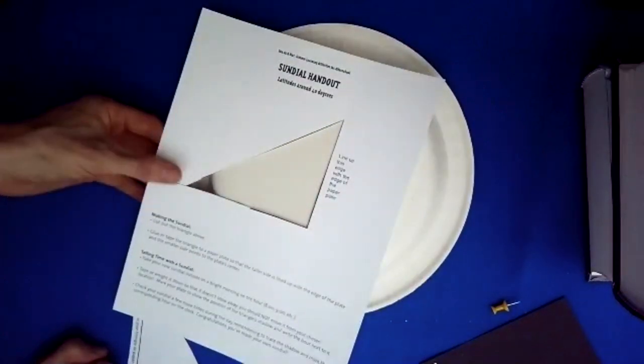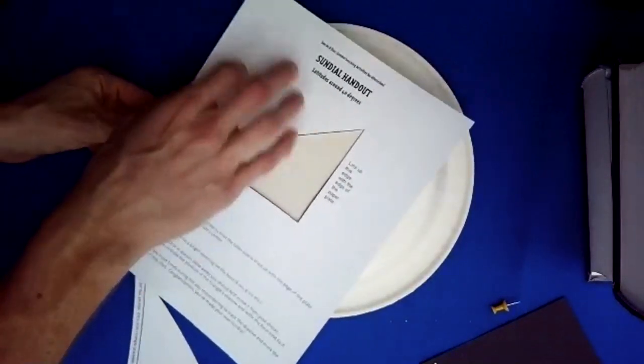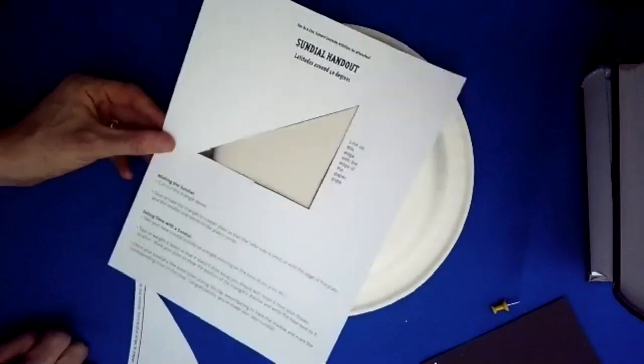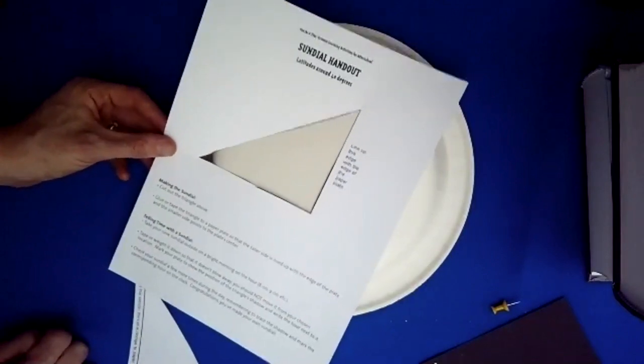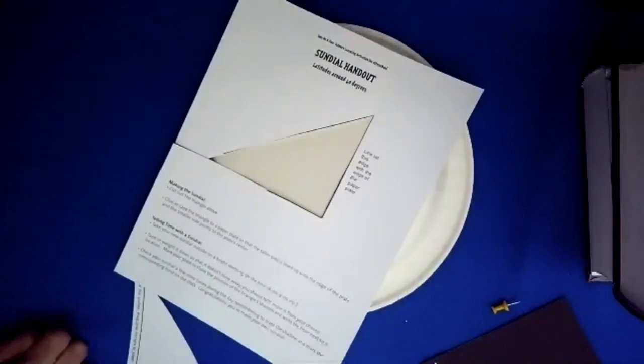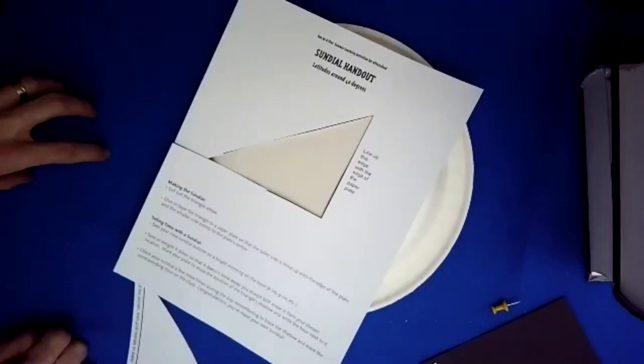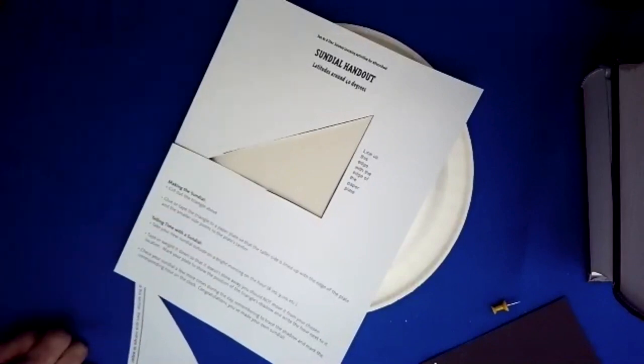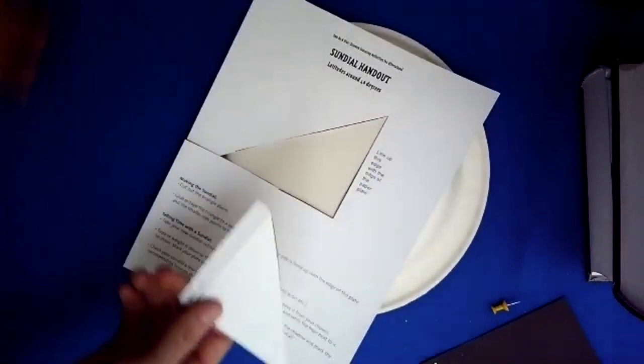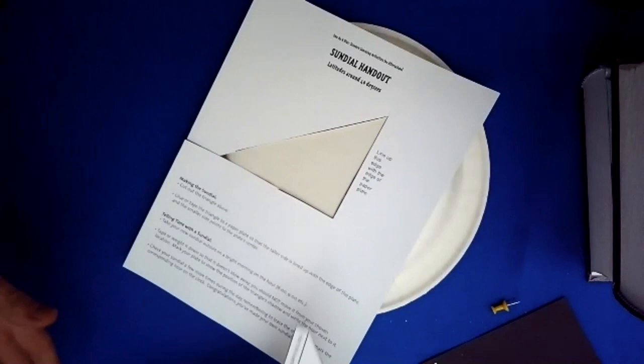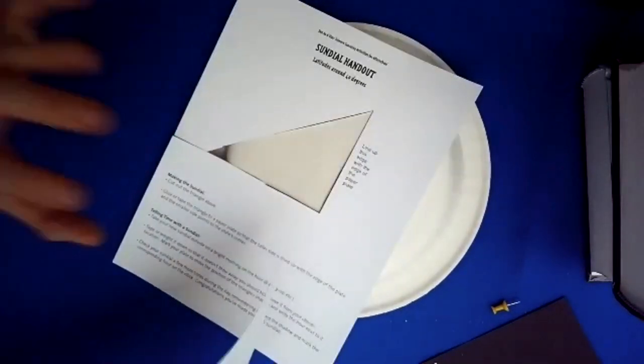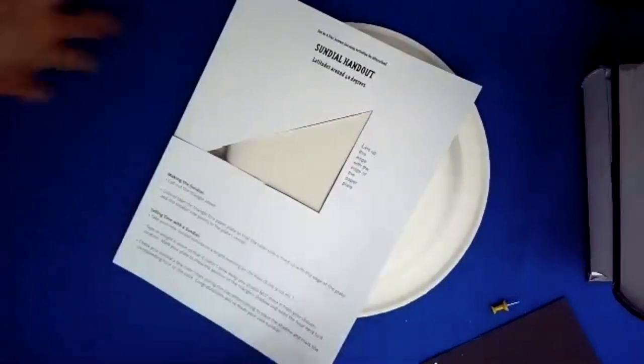There's one for latitudes around 40 degrees and another for latitudes around 30 degrees if you're further south. Just find whichever one you're closest to. Here in Boulder, we're right at the 40th latitude. In Atlanta, it's closer to 30 degrees. There are easy ways to find out your latitude.